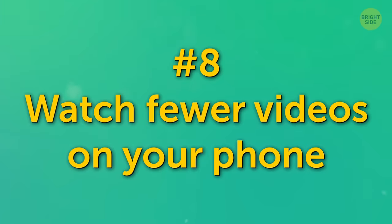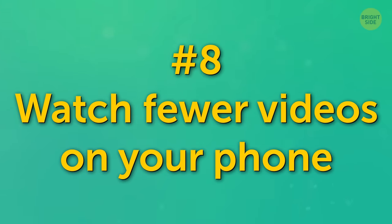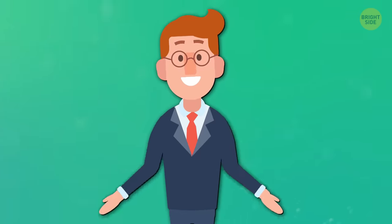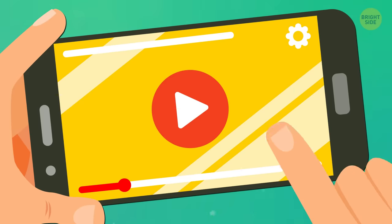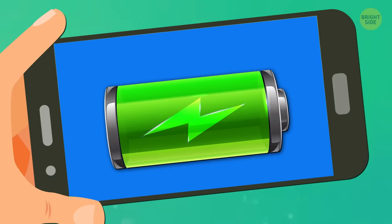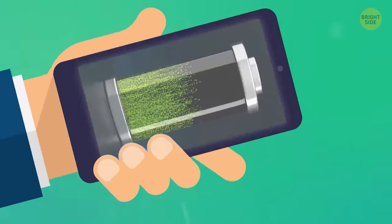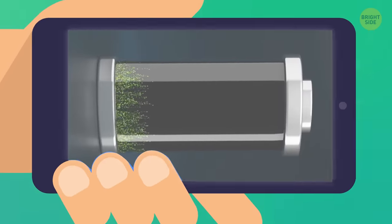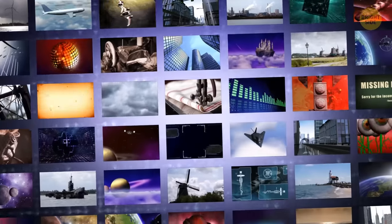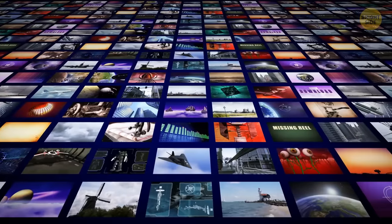Number 8. Watch fewer videos on your phone. It's kind of obvious, but still. Limiting video content is a great way to make your battery last longer. If your screen is the component with the most significant power draw, it's only natural that streaming video is going to be one of the biggest power-draining activities.